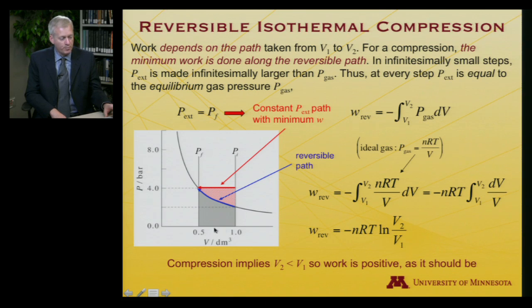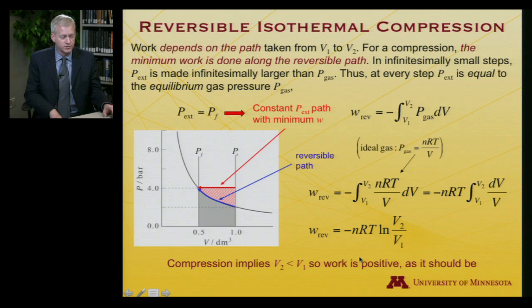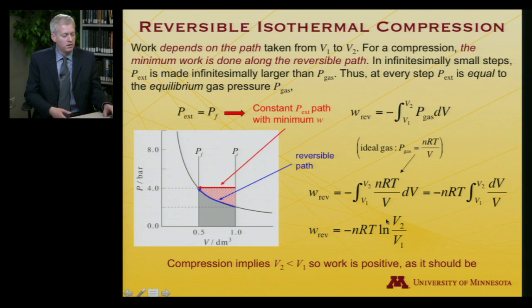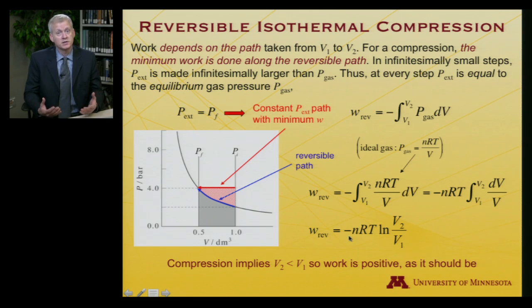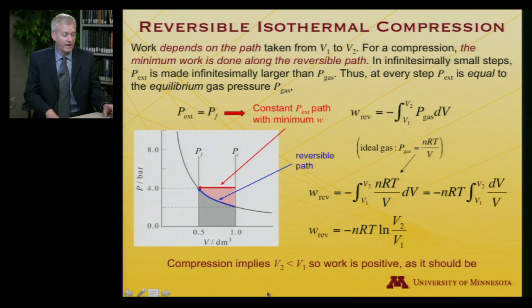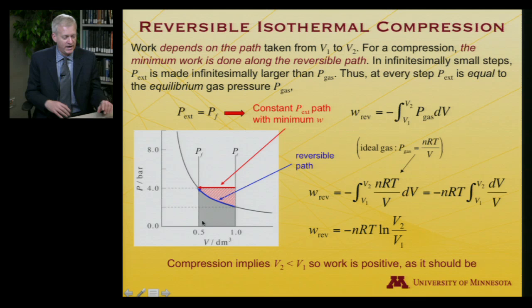We are compressing the gas, so V2 is smaller than V1, meaning we're taking the log of a number less than 1, which is negative. Temperature is positive, n and R are positive constants, so two negatives multiplied together give a positive work. The work is positive — consistent with doing work on the system during compression.